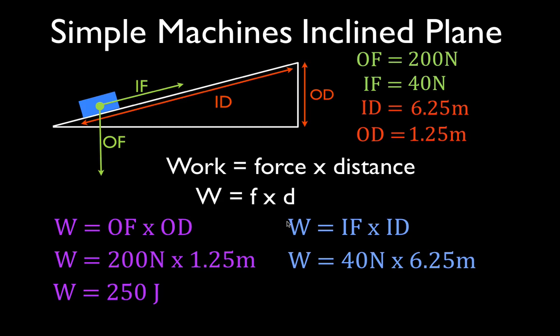Now, you'll notice in this case, the force is less. It's one-fifth because this machine has a mechanical advantage. This incline plane has a mechanical advantage of five.